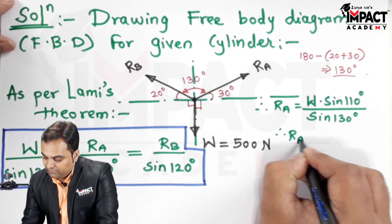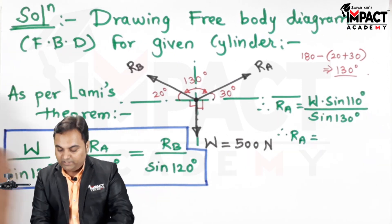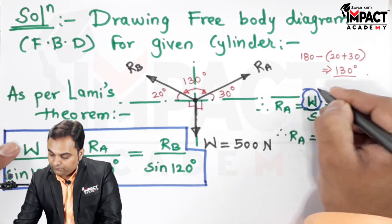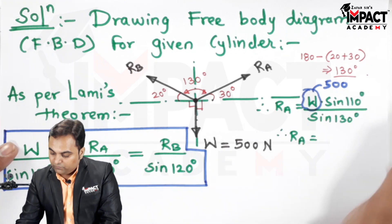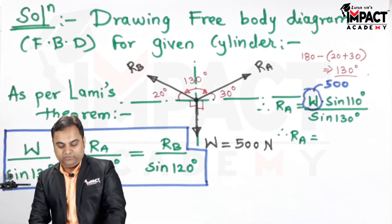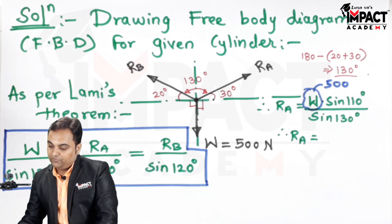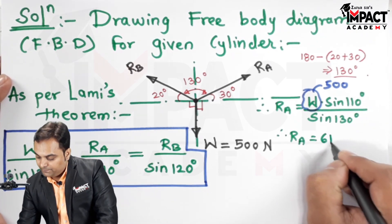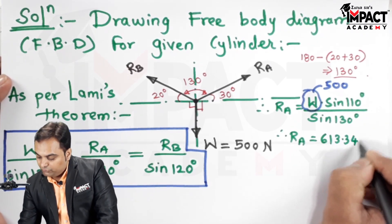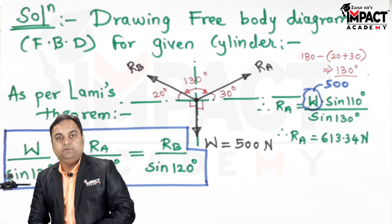So RA will be, since the W value is known to us it is 500, so 500 sin 110 divided by sin 130. RA value comes out to be 613.34 Newton. So that will be the first answer.